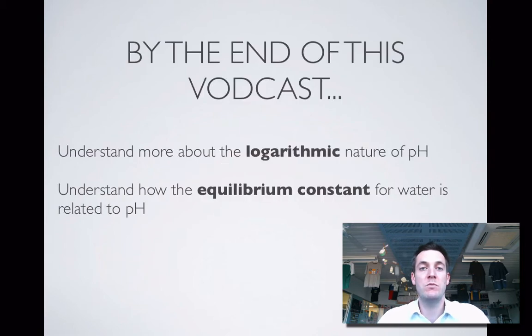You might remember that in year 11 we dealt with nice simple whole number values of pH and the power of 10 values for H plus ion concentrations. In year 12 you have to deal with calculations that don't involve round numbers, so you can't do them in your head—you need a calculator. You need the logarithm functions on your calculator, and we're also going to see how the equilibrium constant for water is related to pH calculations.